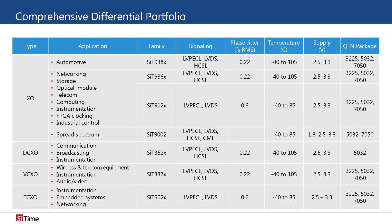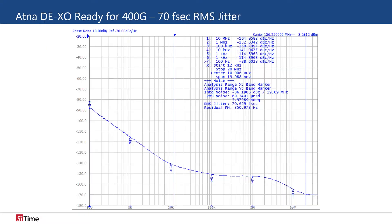With such a wide portfolio of differential oscillators, SciTime has the optimal timing solution for any optical module design. With 400G module production ramping now and 800G being designed, tight phase noise and therefore ultra-low jitter are becoming critical specifications.